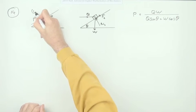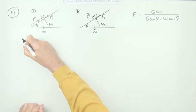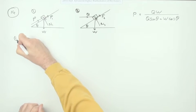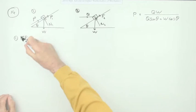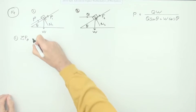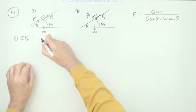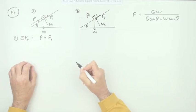There's two situations, number one and number two. Let's take situation one first of all. The sum of the forces along the plane, you've got P plus, we'll call it F1.